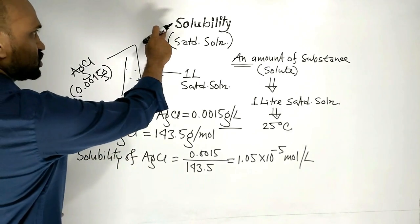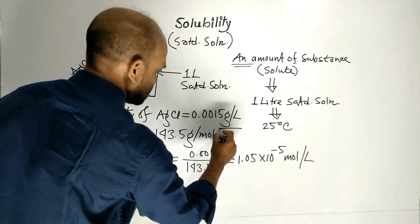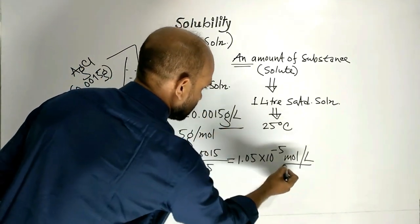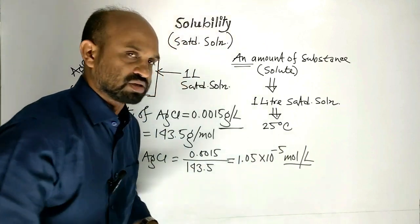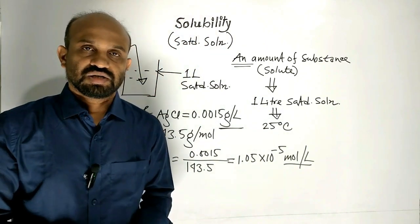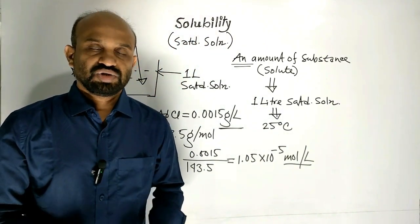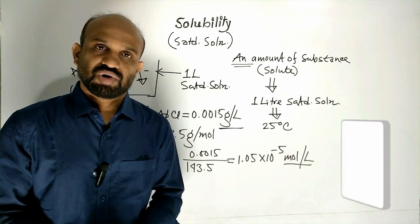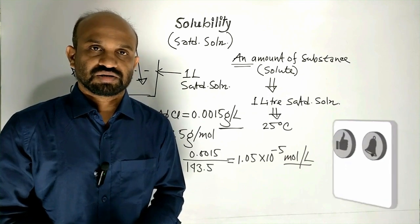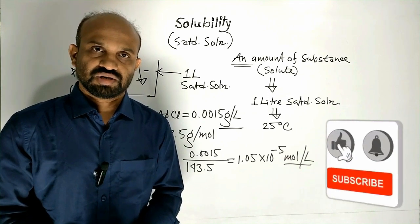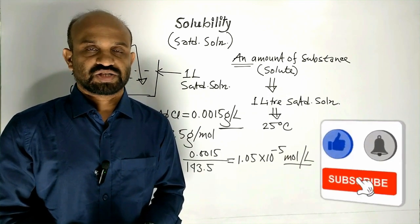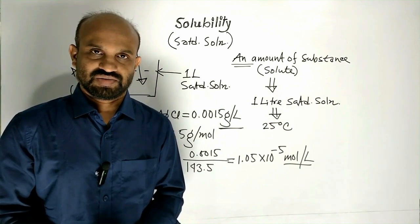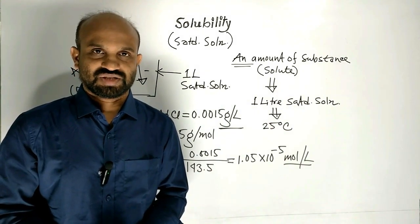The unit of solubility will be gram per liter or mol per liter. The amount of substance which is required to make 1 liter saturated solution at a specific temperature is known as solubility. Thank you very much.